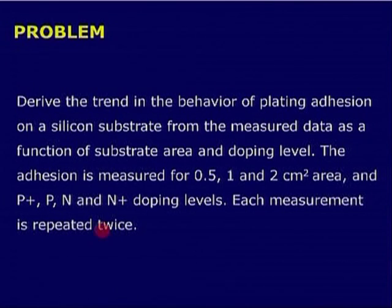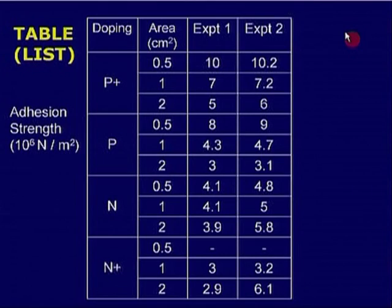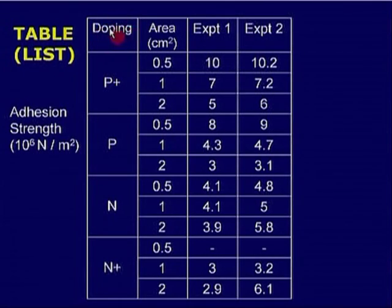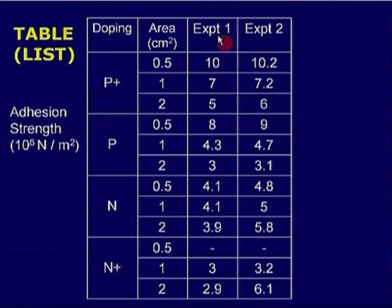Let us see one form of table — the simplest form, called the list form, where you list out the various values. The first column is the substrate condition, called doping. You have four different substrate conditions, and for each substrate condition, three different areas. For each substrate condition and area, the measurement is repeated twice — experiment 1 and experiment 2. In some cases, if a reading could not be obtained, it is reported as a dash.